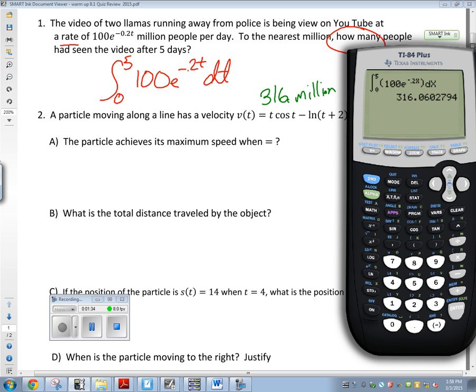Oh, to the nearest million. Good answer. So 316 million is going to be my answer to that question. To the nearest million, 316 million. Does it make sense how we did that one? It looks like a hard question when you start to read it, but when you think about what it is, it's easy. Throw it into integration and go. Good on number one.